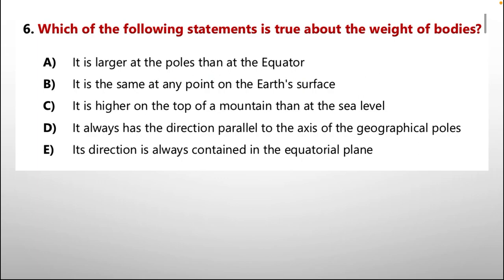Question number 6: which of the following statements is true about the weight of bodies? Option A: it is larger at the poles than at the equator. B: it is the same at any point on the earth's surface. C: it is higher on the top of a mountain than at sea level. D: it always has the direction parallel to the axis of the geographical poles. E: its direction is always contained in the equatorial plane.